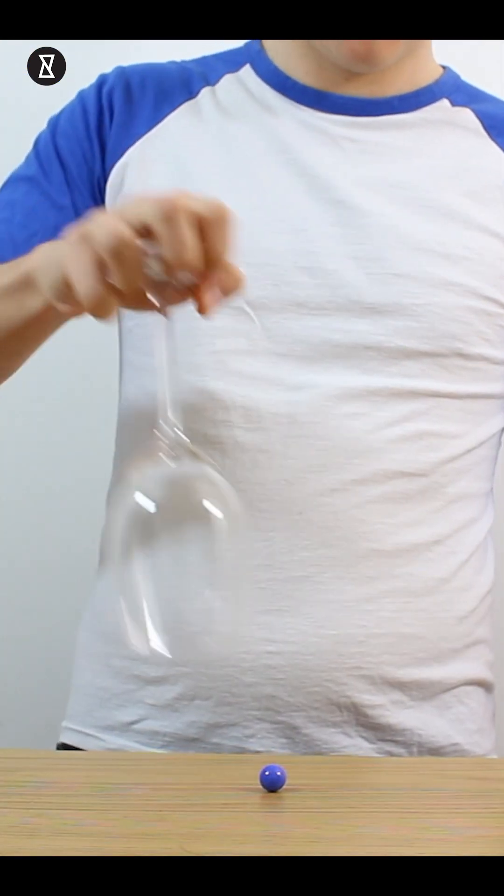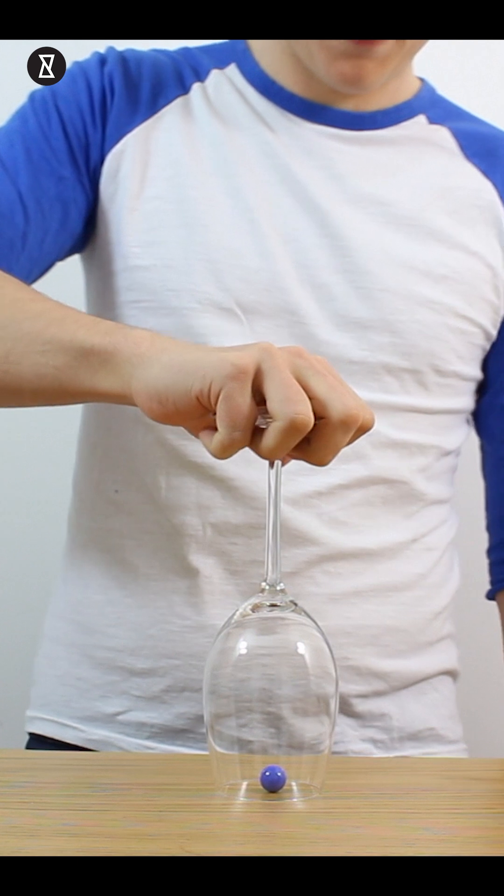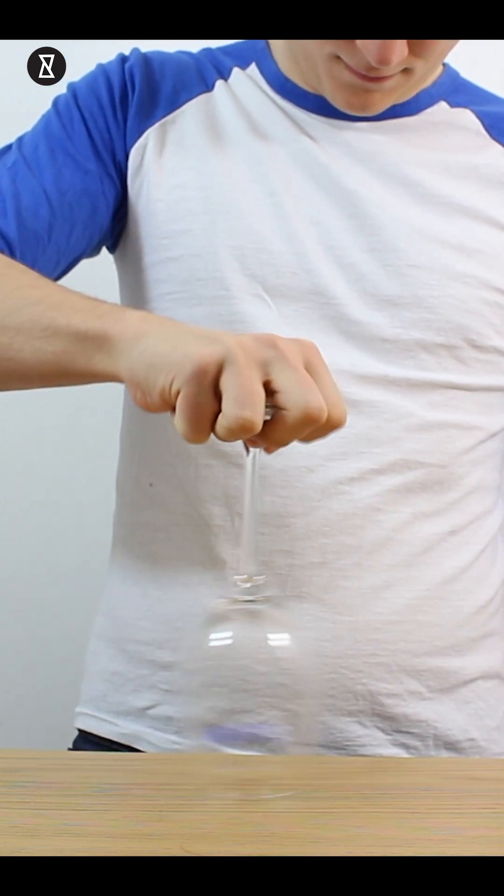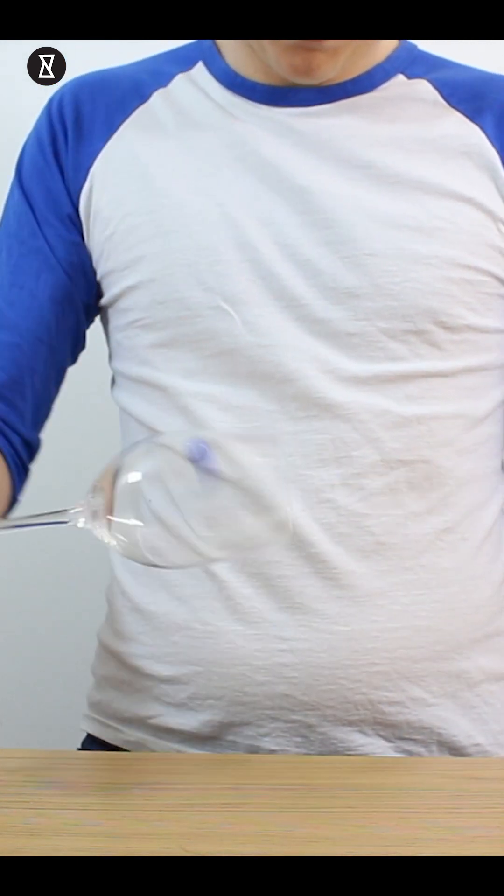The second version of the trick: place the glass on top of the marble and carefully spin the glass around it to see if you can pick the marble off the tabletop.